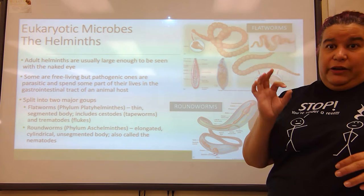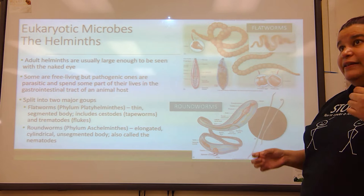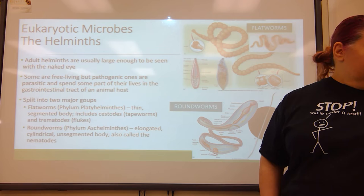Now the roundworms. Roundworms are circular — they're not flat like a ribbon. The phylum is Aschelminths instead of Platyhelminthes. They are elongated and cylindrical, and usually their body is unsegmented. They can also be called nematodes.